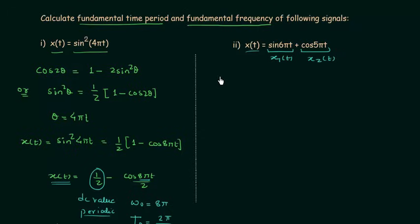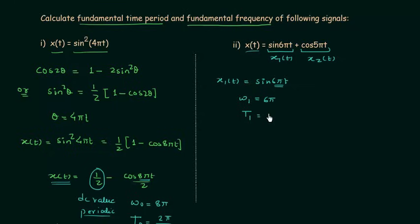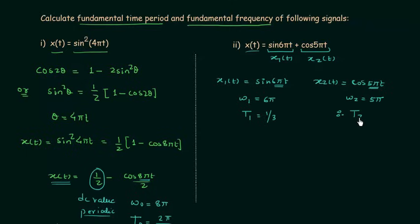In step 1 we calculate the fundamental period of each component. For x₁(t) = sin(6πt), ω₁ = 6π, so T₁ = 2π/6π = 1/3 seconds. For x₂(t) = cos(5πt), ω₂ = 5π, so T₂ = 2π/5π = 2/5 seconds.